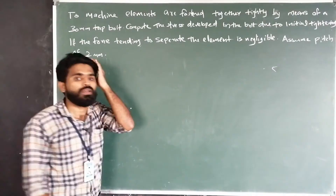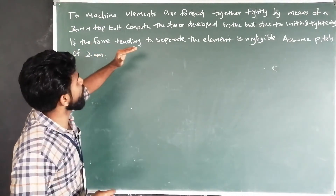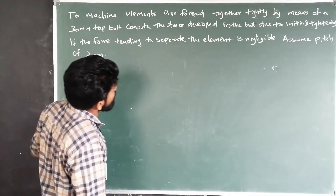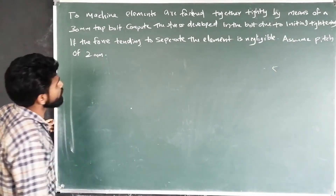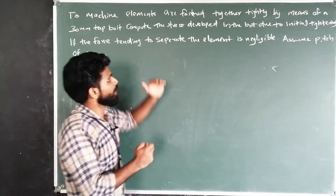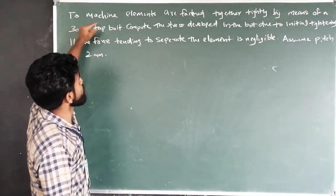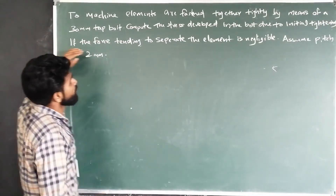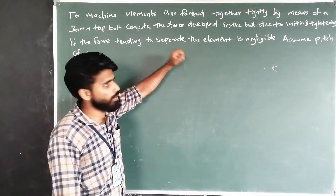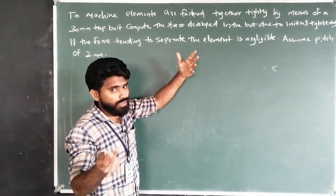Let's take a look at the next question. Two machine elements are fastened together tightly by means of a 30 mm tap bolt. Compute the stress developed in the bolt due to initial tightening if the force tending to separate the elements is negligible. Assume a pitch of 2 mm.